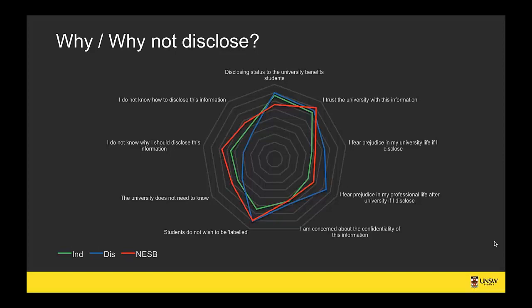Looking at the graph, non-English speaking background students see the least reason to disclose in terms of why they should, with Indigenous students just after that, and students with disabilities seem to have least issues deciding what they get for their disclosure — possibly because they receive a lot of targeted programs. Students with disabilities and Indigenous students most firmly approve of disclosing to benefit other students, while non-English speaking background students see relatively less reason for that.